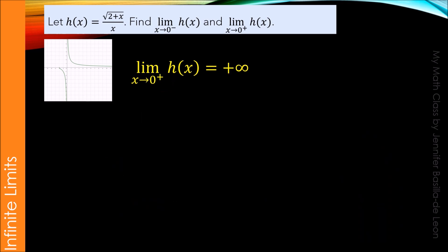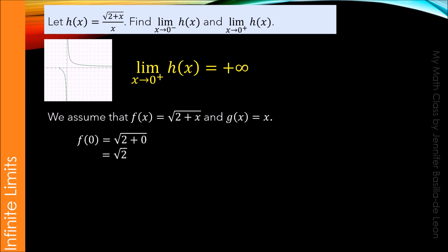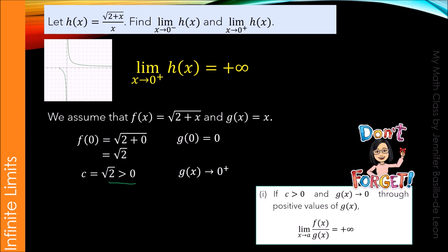Let's also verify the limit of h(x) as x approaches 0 from the right. Again, f(x) equals the square root of (2 plus x) and g(x) equals x. Evaluating each function at x equals 0, we get the same results: c equals square root of 2, which is greater than 0, and g(x) equals 0. Remember that g(x) approaches 0 through positive values. With these, we use condition number 1, where c is greater than 0 and g(x) approaches 0 through positive values. Hence, the limit of h(x) as x approaches 0 from the right is positive infinity.